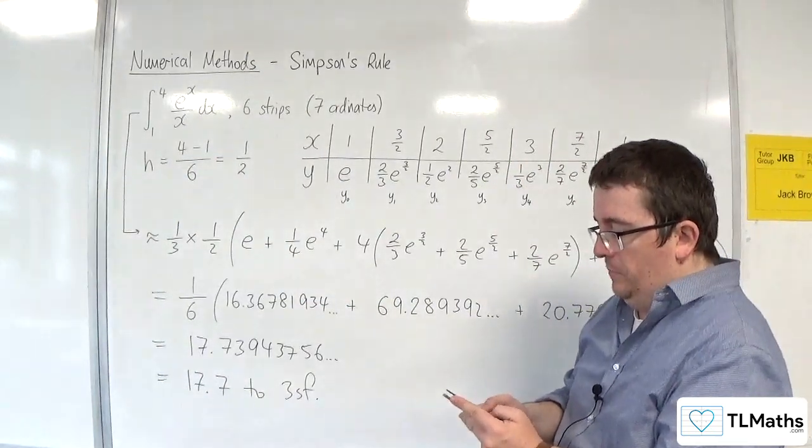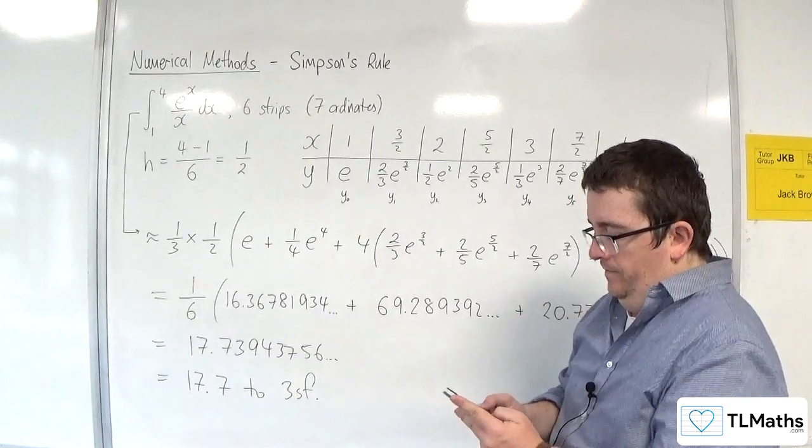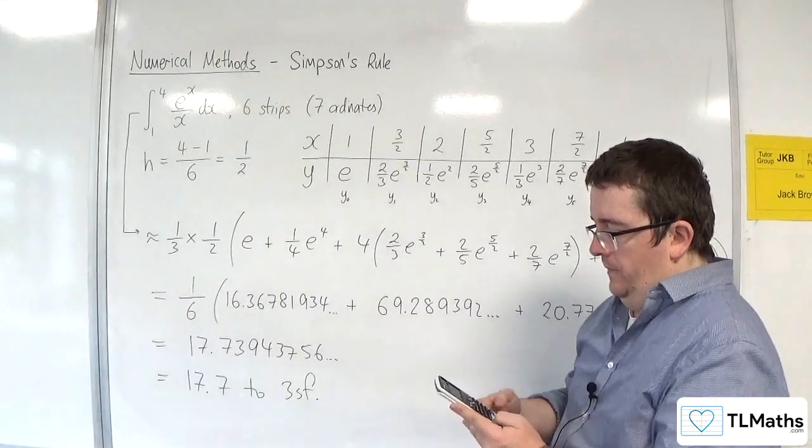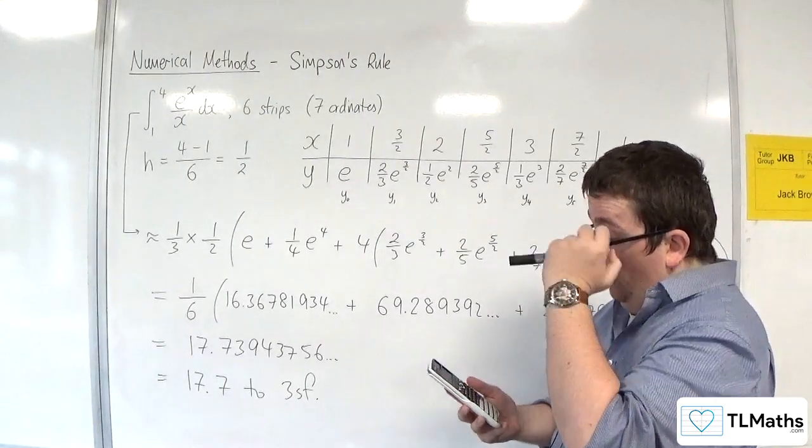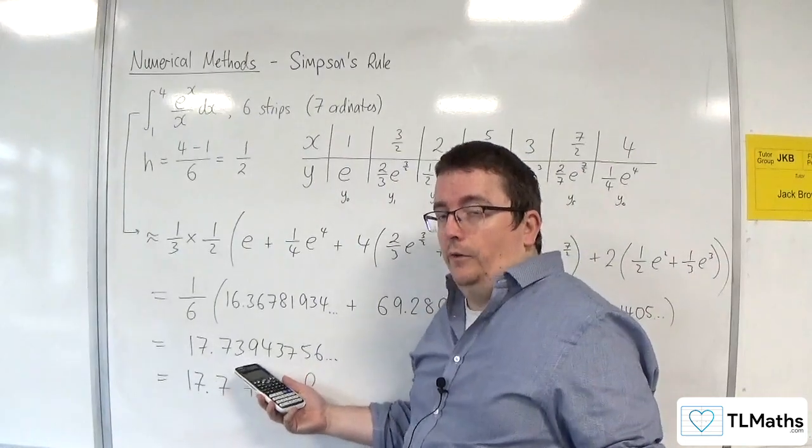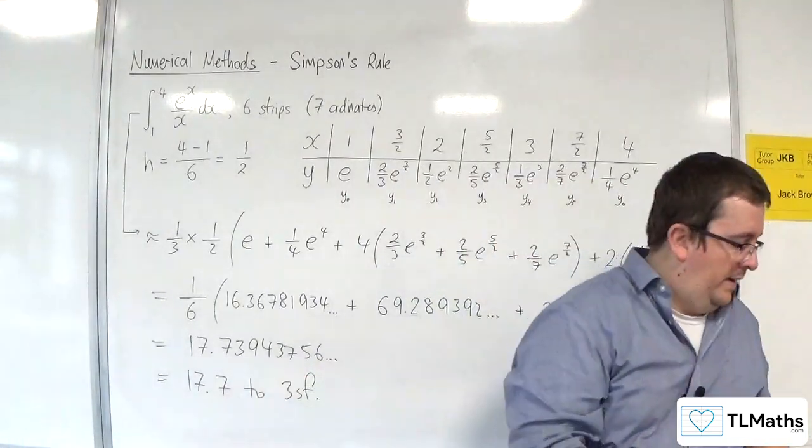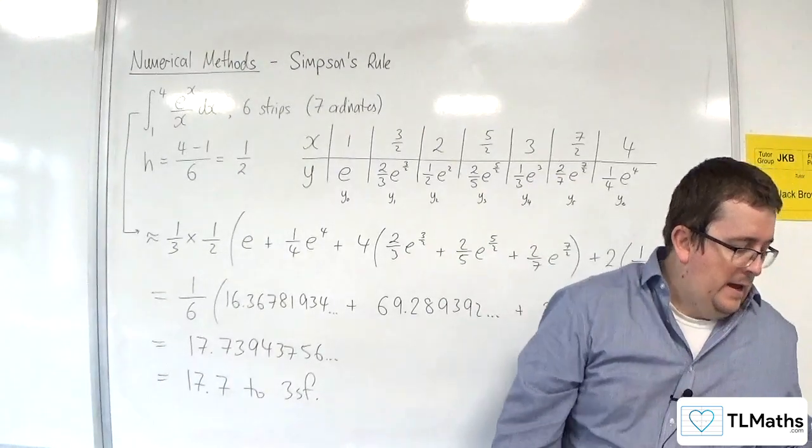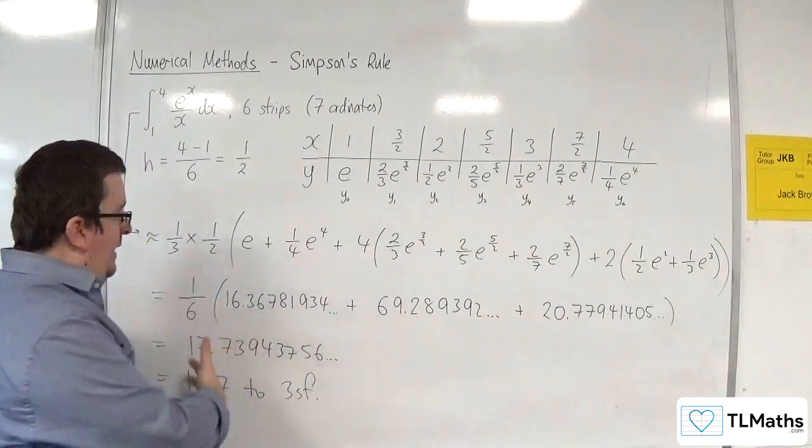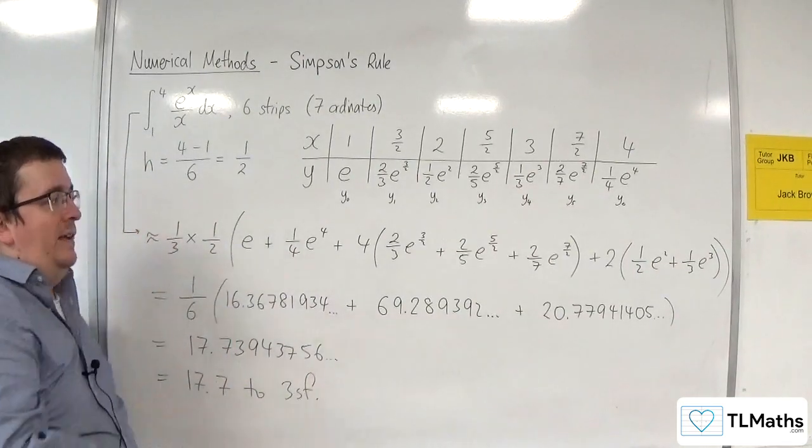And then I would want to go back to my integral and pop it into my integral solver to make sure I've got something that is reasonable. So 1 to 4. And we get 17.7357. So it's really close. Okay. 17.7 to 3 sig fig. So Simpson's rule here gave me a value that was really close to what this is actually.